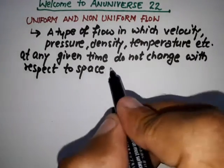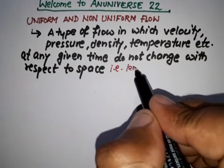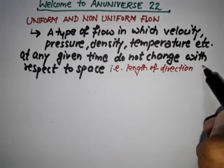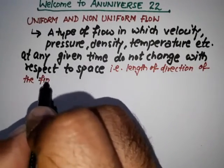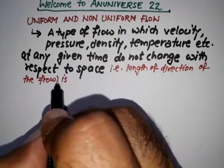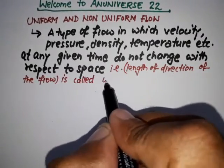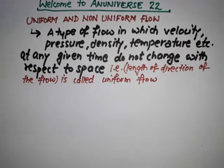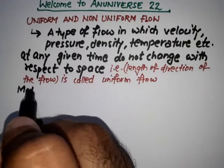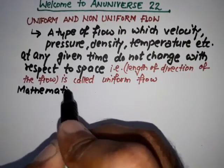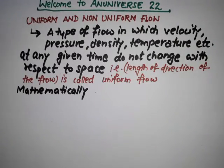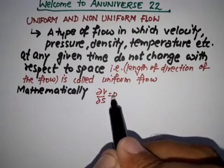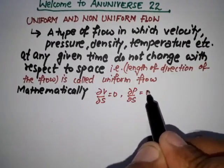This is called uniform flow. Mathematically, it can be written as ∂V/∂S = 0 and ∂P/∂S = 0, for uniform flow.